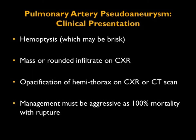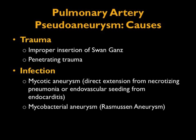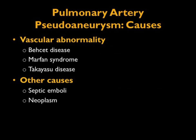Pulmonary artery pseudoaneurysms are rare, but when they present you can have massive hemoptysis — the patient can bleed to death quickly. Presentation can include a rounded mass that looks like a pseudo-lesion or total opacification. Management needs to be aggressive or the patient will die. Causes include trauma such as Swan-Ganz catheter insertions or stab wounds, infection such as mycotic or mycobacterial aneurysms, and vascular abnormalities from Behcet's to Marfan's to Takayasu's, as well as causes like sepsis and neoplasm. Complications also involve the chest wall, including the pre-sternal and retro-sternal spaces and the sternum itself.